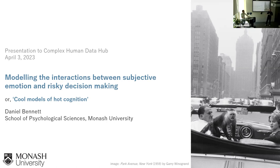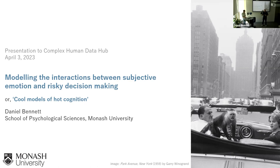Today we are incredibly privileged to have Daniel Bennett talking to us about my favorite topic: Cool Models of Hot Cognition, also titled Modeling the Interactions between Subjective Emotion and Risky Decision-Making. When I came to this university in 2019, I was repeatedly told how unfortunate I was that this amazing man, Daniel Bennett, had left for Princeton the year before. At Math Psych, I got to meet Dan for the first time, and I've got to say, he lives up to the hype.